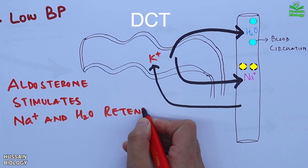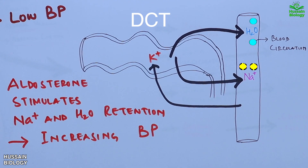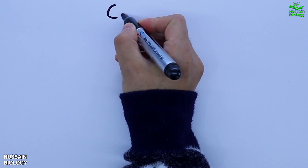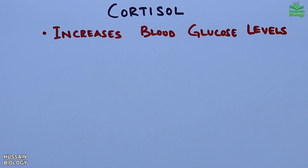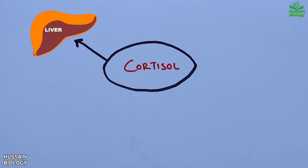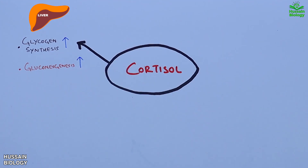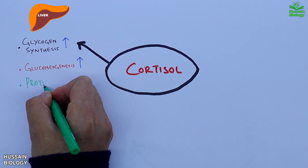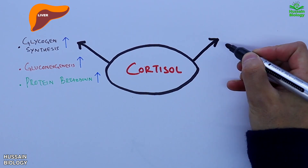The second hormone from the adrenal cortex is cortisol, which mainly increases blood glucose levels. Cortisol targets the liver, where it mediates glycogen synthesis, increases gluconeogenesis, and also increases protein breakdown. All these metabolic actions lead to hyperglycemia.